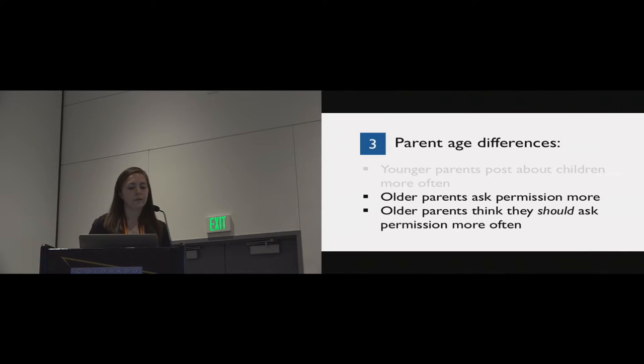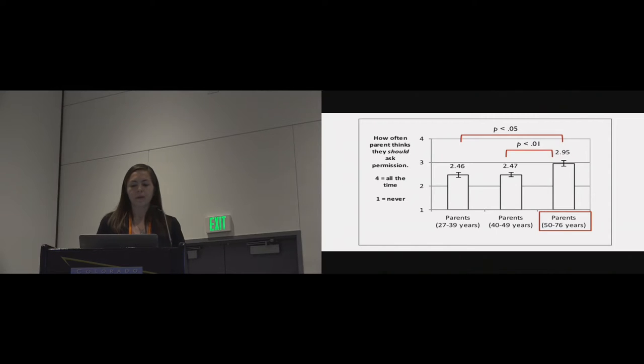We also found that older parents both self-report that they ask permission more and that they think they should ask permission more. So in particular, parents 50 and older reported that they think they should ask permission more often than parents in their 20s, their 30s, or their 40s. And you can note that this analysis does control for the age of the child.